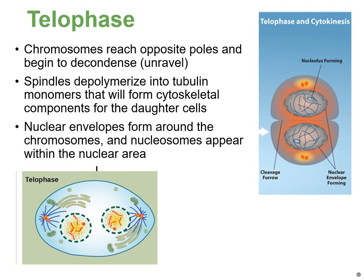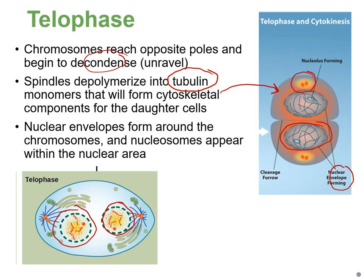In telophase, the chromosomes decondense once they reach opposite ends of the cell and the nuclear envelope reforms — essentially the opposite of prophase. The spindle fibers depolymerize, breaking back into their tubulin monomers, which will be recycled to form cytoskeletal elements of the future daughter cells. As the nuclear envelope reforms, nucleosomes appear and chromosomes ultimately decondense to form chromatin again.